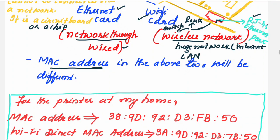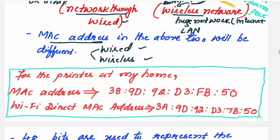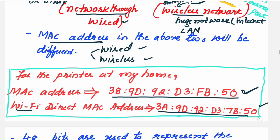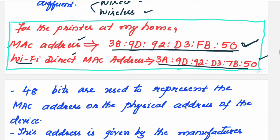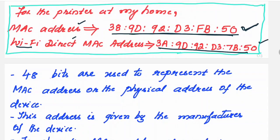Since devices support both wired and wireless connections, they have two MAC addresses — one for wired and one for wireless. While preparing this lecture, I checked the MAC address of my home printer and found two MAC addresses: one for the wired connection and one for the Wi-Fi connection. Many times I use my printer via Wi-Fi, so there is a separate MAC address for each connection type.